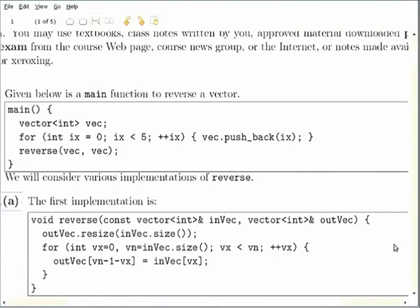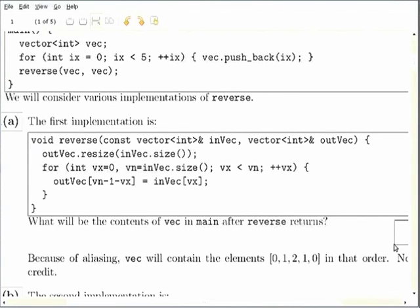The first question was about passing by reference and what happens if there is aliasing among the variables involved in a function argument. So main thinks that someone has implemented a reverse function which will work for any input and output arguments. It passes in vec and also passes in vec as the output argument thinking that vec will be updated correctly in place to become the reverse of the original vec.